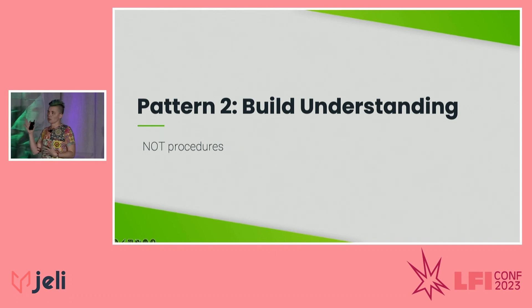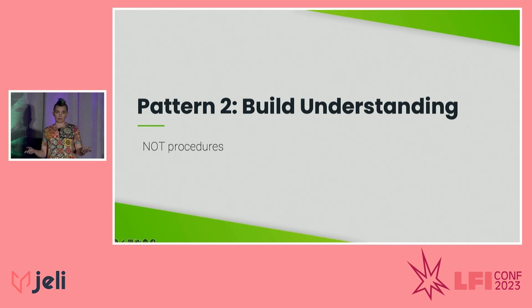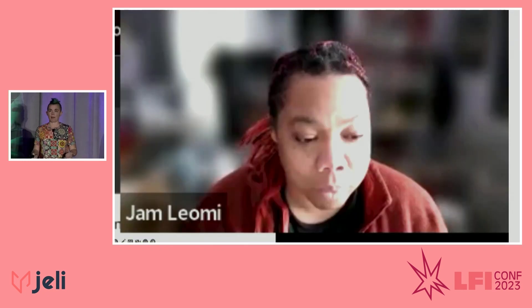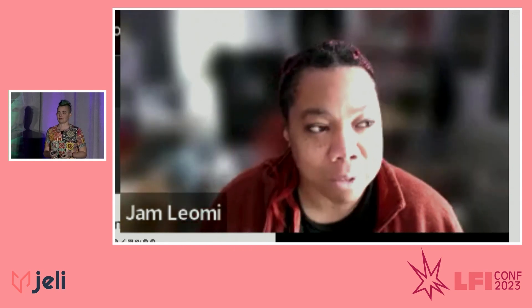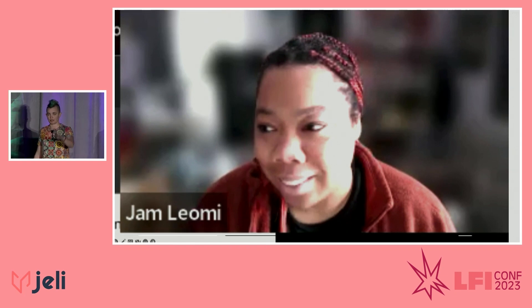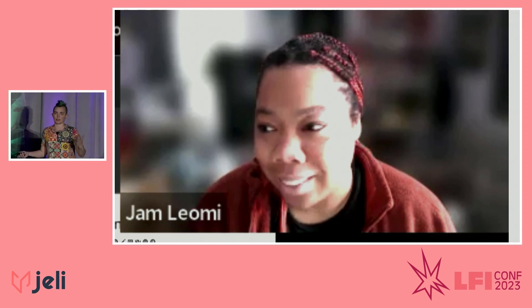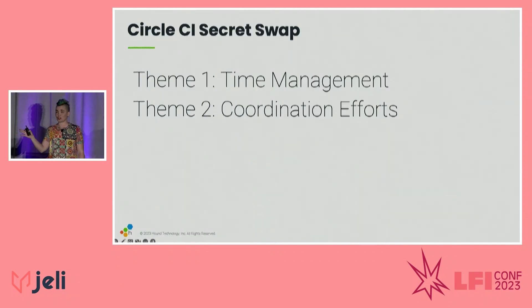Our objective is always to build shared understanding among the team. Jam talks about what's different about security incidents: 'With security incidents, it's like you're starting from a blank drawing board.' And that blank drawing board filled up really fast when we started listing all the secrets and keys we needed to revoke and renew. We popped open a Google Doc and it reached 21 pages by the end. That's the next theme: coordination efforts. 29 people were involved in this incident.